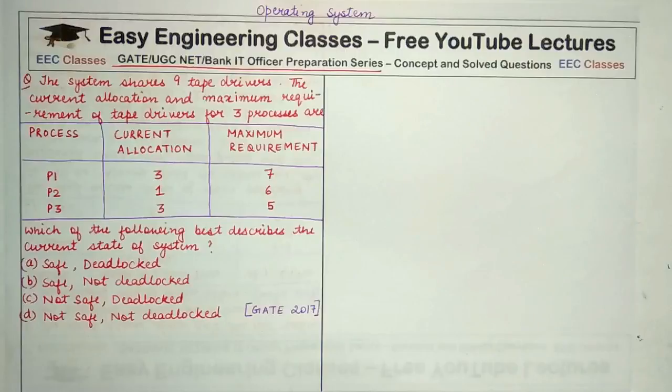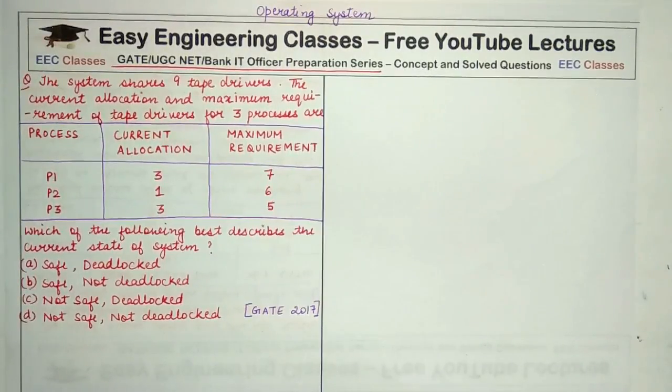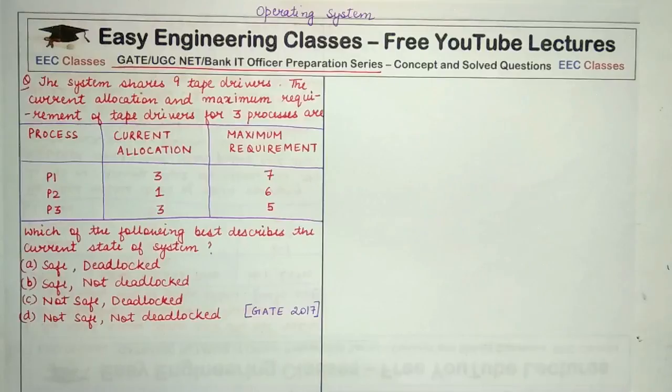In this lecture we'll study a question on operating system that will be useful for your preparation for GATE computer science, bank IT officer exam, and UGC NET computer science exam. This question appeared in GATE 2017 and it will be very useful if you understand the concept of deadlocked state using banker's algorithm. I'll tell you a short way of solving this question.